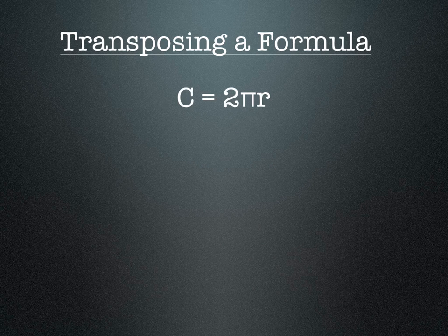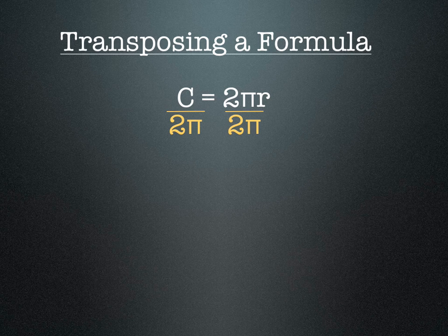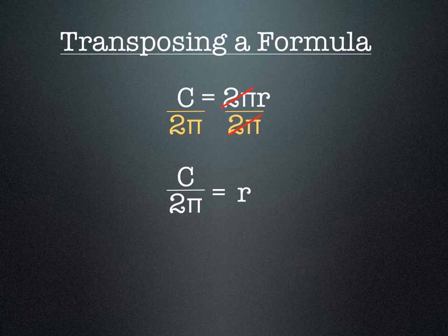Now let's look at transposing a formula. The equation for the circumference of a circle is C equals 2 times pi times r, where r is the radius. That's great for finding the circumference, but what if you want to find the radius? We rearrange by dividing both sides by 2 pi. The 2 pi cancels on the right, leaving us with r equals C over 2 pi, which is a much more useful equation for finding the radius.